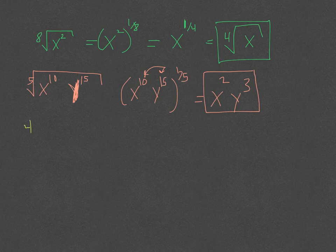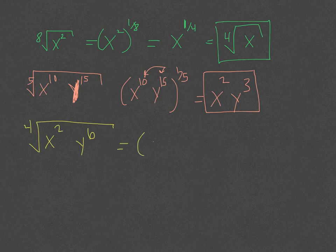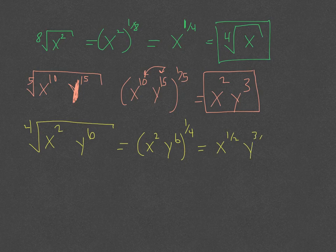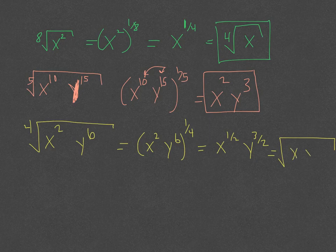For the fourth root of x squared y to the sixth: rewrite as x squared y to the sixth, all to the 1/4 power. Two times 1/4 gives x to the 1/2, and 6 times 1/4 gives 6/4, or 3/2. Since both have a denominator of 2, the answer is the square root of x times y cubed.